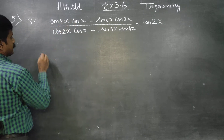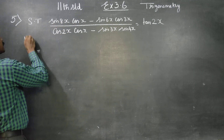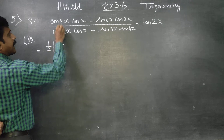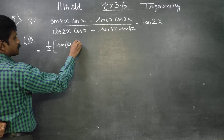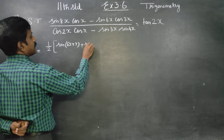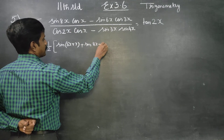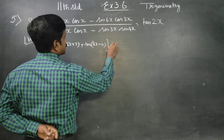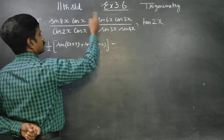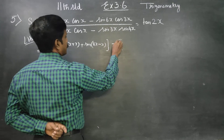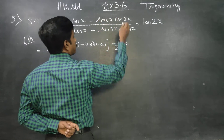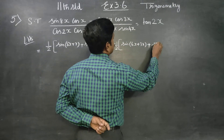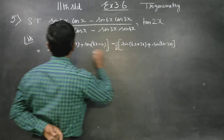Starting with the LHS: sin A cos B. Using the product-to-sum formula, sin A cos B can be written as half of sin(A+B) plus sin(A-B). So we have 1 by 2 times sin(A+B) plus sin(A-B), all divided by the corresponding expression.